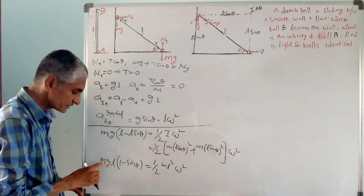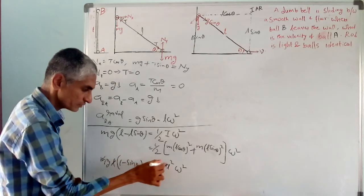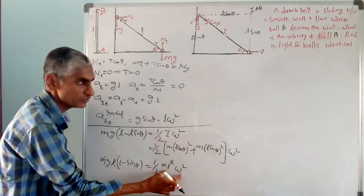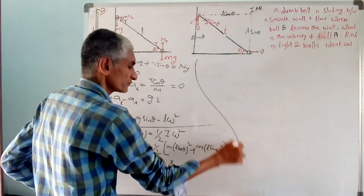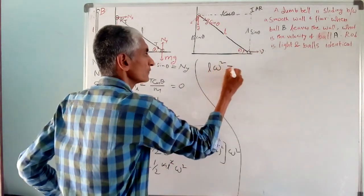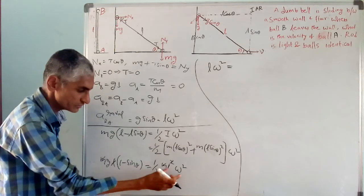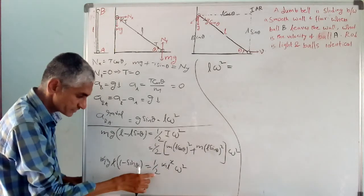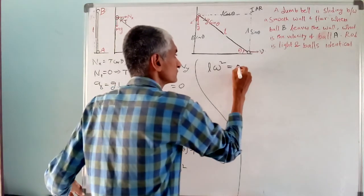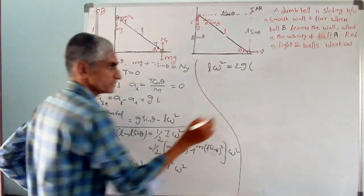Canceling L on both sides, we get L omega squared equals 2G times (1 minus sin theta).